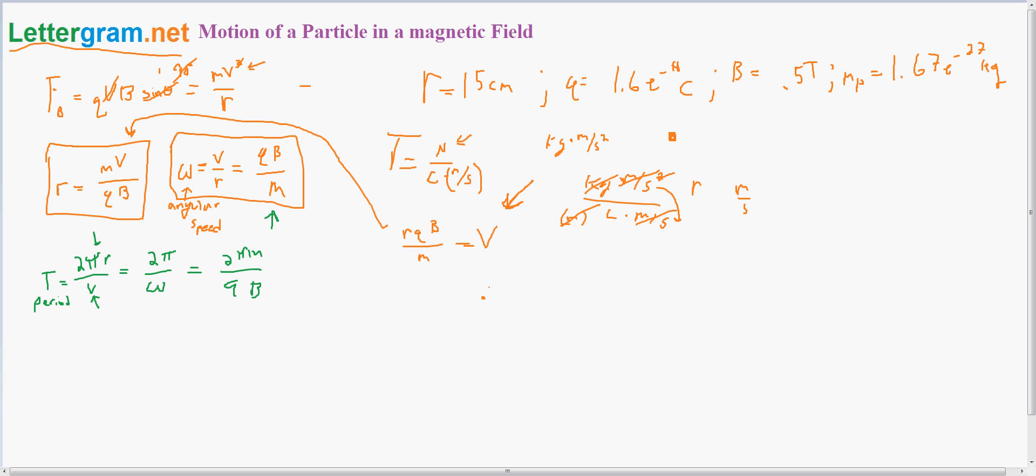We have radius 0.15 meters times charge 1.6×10^-19 coulombs times 0.5 tesla divided by 1.67×10^-27 kilograms. If you plug it into your calculator, it equals 7.19×10^6 meters per second. This might seem really fast, but particles moving in a magnetic field do move very fast. That's how they can get particles moving nearly the speed of light.